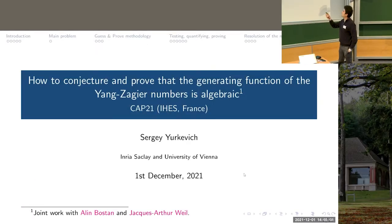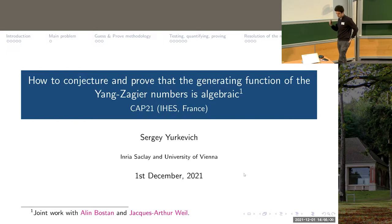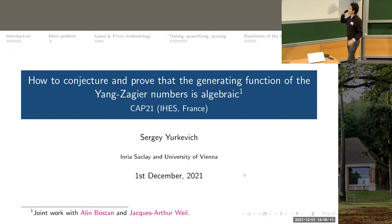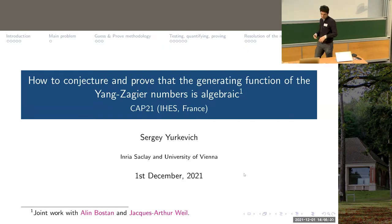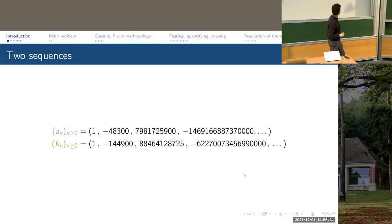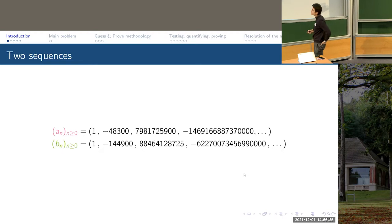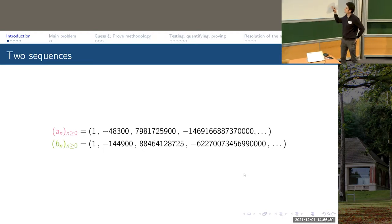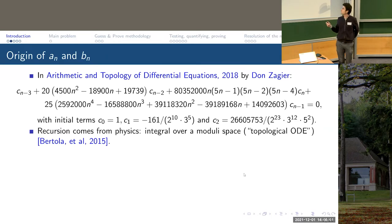I will talk about how to conjecture and prove that the generating function of the Young-Zagier numbers is algebraic. But I want to mention now, and will repeat it, that this is not the main message — to prove this explicit example — but rather to show several methods on how to do this in general. These are the two sequences that will lead us through the whole presentation.